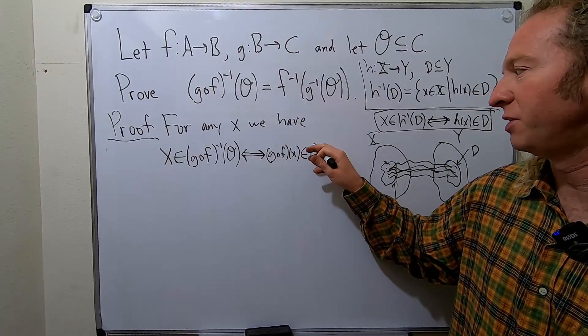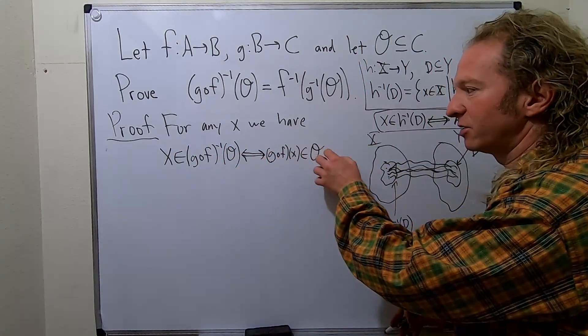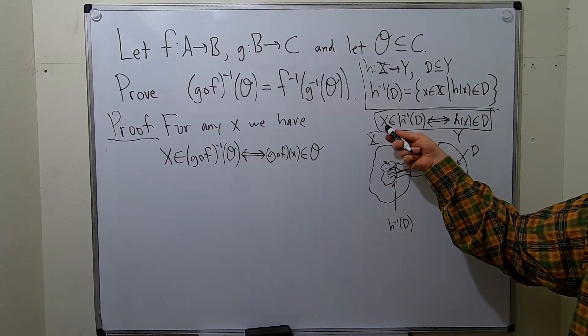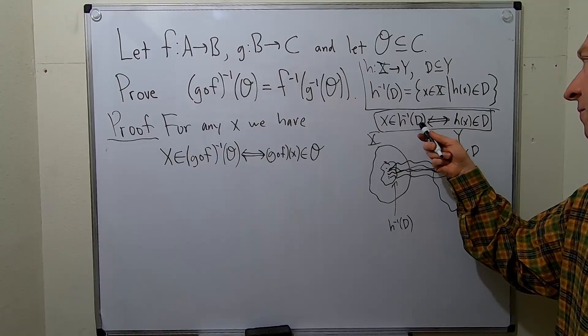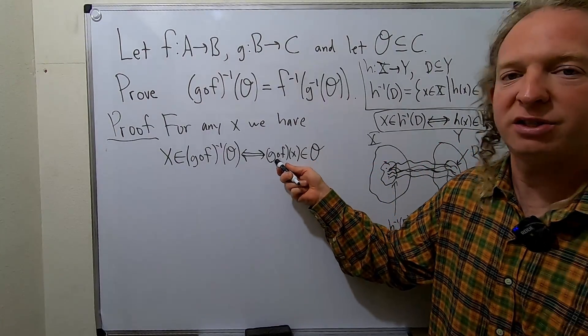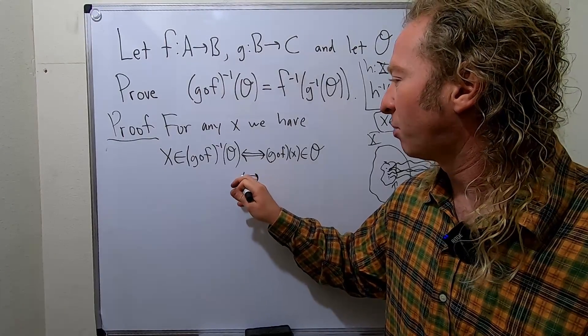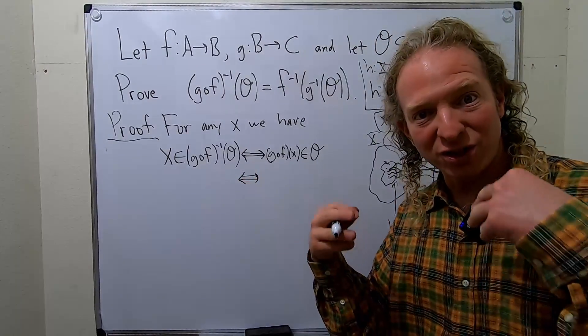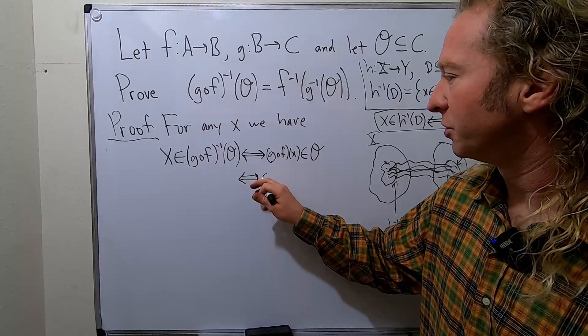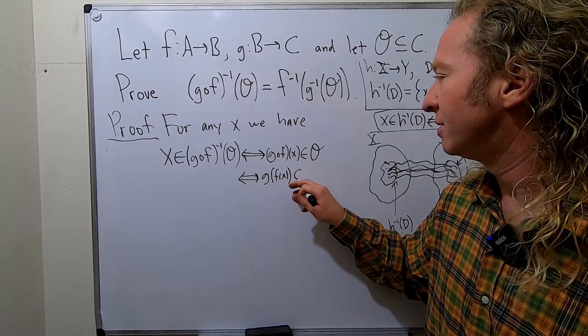This is equivalent to saying that GOF of X is in O. Let me pause here and explain this carefully. So if X is in here, then GOF of X is in O. It's kind of like this, right? If X is in H inverse of D, H of X is in D. Same thing here. Your H is the GOF. Okay. So this is equivalent to saying, now let's apply GOF. GOF is actually G of F of X. So it's G of F of X is in O.